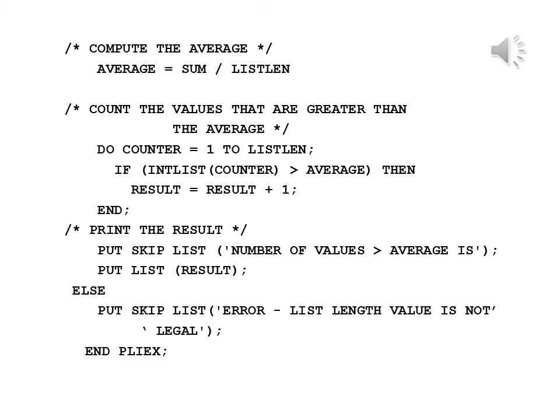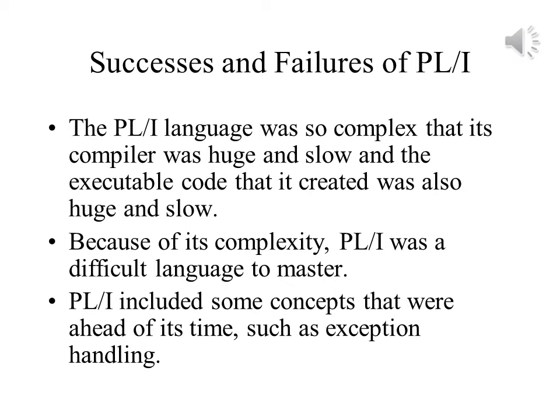In PL/1, GET LIST does unformatted reading, and PUT SKIP LIST does unformatted writing on a new line. READ and WRITE are also used, but only for binary files. As you should expect for so complex a language, its compiler is huge and pretty slow, and the same can be said for the object code that it generates. The complexity made it difficult to learn, and this made it difficult to find programmers who were competent in it.